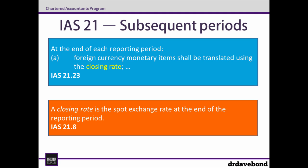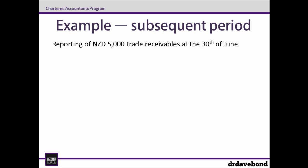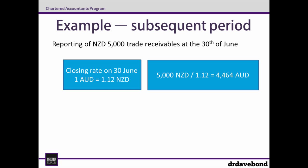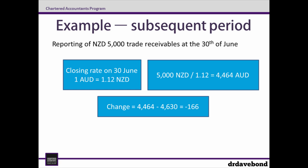The closing rate is the spot exchange rate as at the end of the reporting period. Turning back to our example, we convert the 5,000 New Zealand dollar trade receivable into Australian dollars using the closing rate, which is the rate at the 30th of June. This is equal to 1 to 1.12, so to get the Australian amount we divide 5,000 by 1.12, which leaves us with 4,464. The change is a decline from 4,630 to 4,464, or 166, which means we have to credit trade receivables 166 as it has dropped.